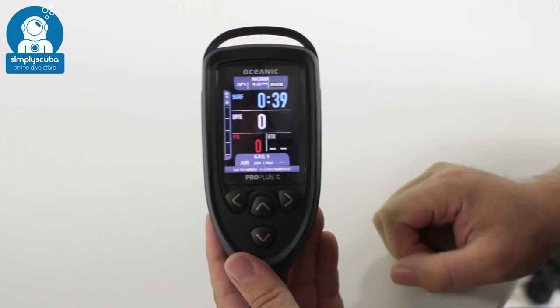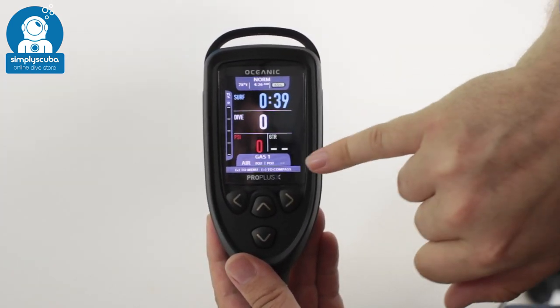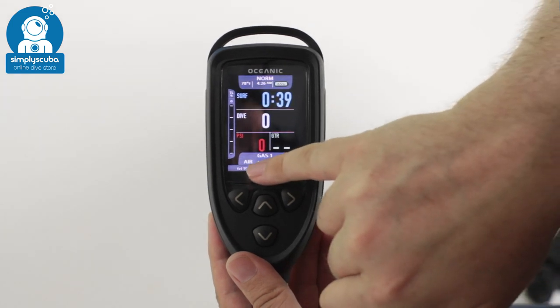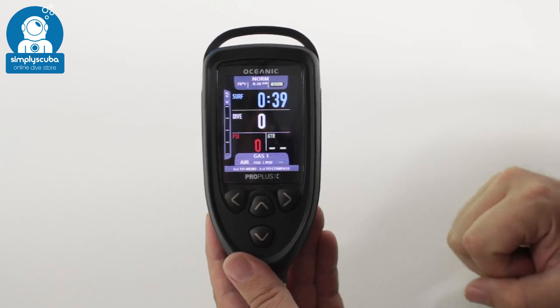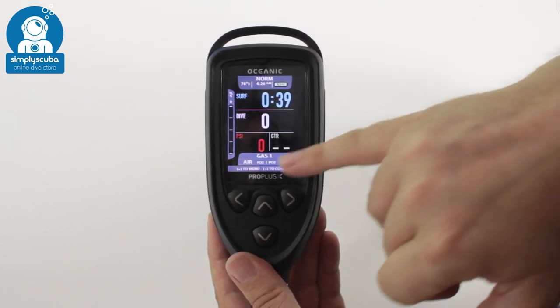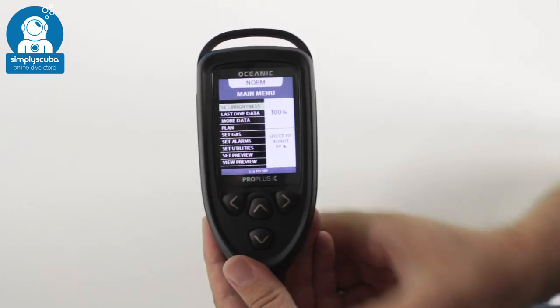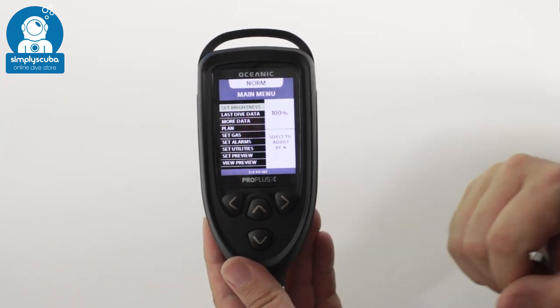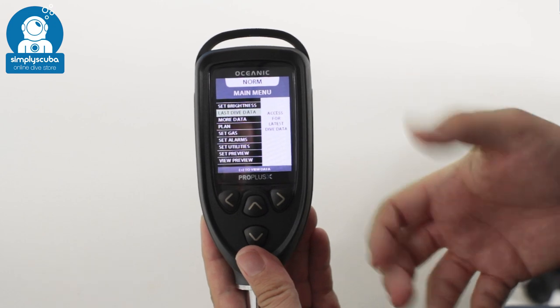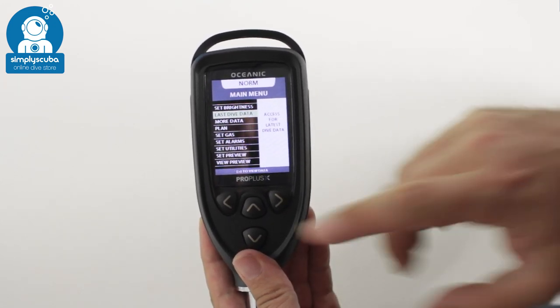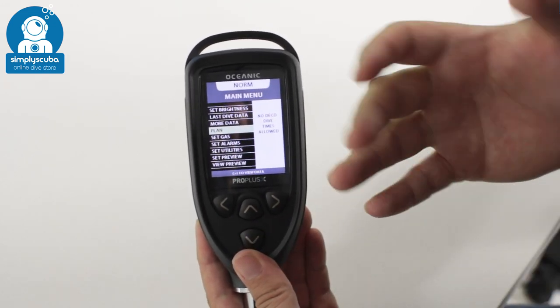Down at the bottom you can see exactly what each button will do, so it's very easy to navigate around the dive computer. To go to the menu, you just press the down button. You can adjust the brightness, you can go to last dive data, so that's very handy for logging your dives in your logbook. Even more data, you have a planner as well.